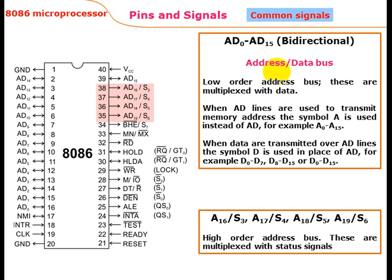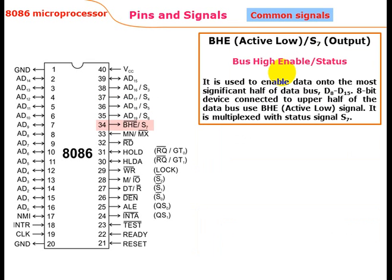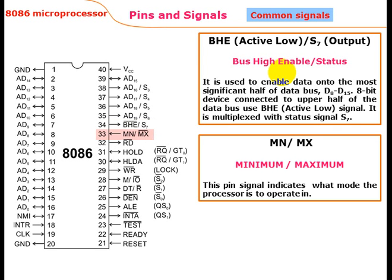Pins AD16/S3, AD17/S4, AD18/S5, AD19/S6 are the high-order address bus, multiplexed with status signals. BHE (active low)/S7 is the bus high enable signal — it is used to enable data into the most significant half of the data bus D8 to D15 for 8-bit devices connected to the upper half of the data bus. BHE is multiplexed with status signal S7. The MN/MX pin indicates what mode the processor is operating in.